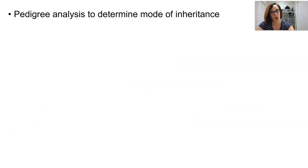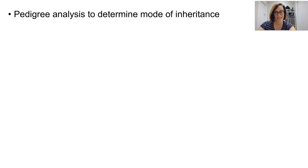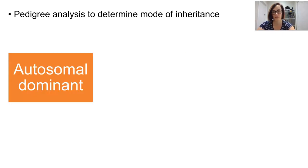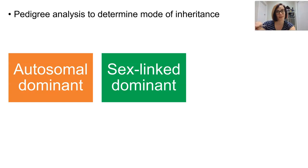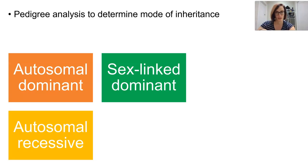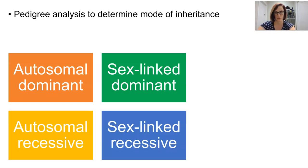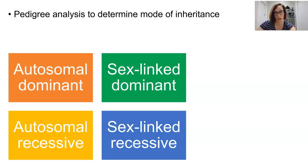We use these pedigrees to determine the mode of inheritance of a trait. The modes of inheritance we've already discussed are either autosomal or sex-linked, and these traits can be passed in a dominant or recessive manner. So our four main modes are autosomal dominant, sex-linked dominant, autosomal recessive, or sex-linked recessive. We'll spend more time in class on these, though this is not explicitly mentioned in the syllabus document — it's just another tool in our cabinet.